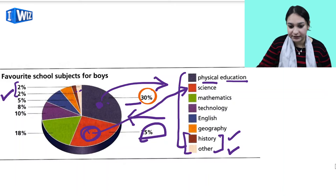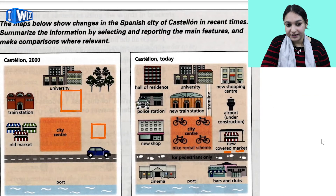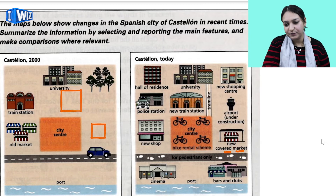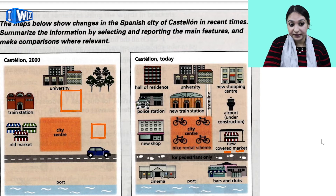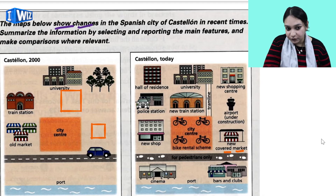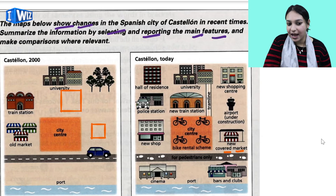Now let's practice one more visual representation. Here we have a map. A map is also a visual representation — when we read a map, we get many information points and data, and using that data we build a paragraph in our own words and write our answers. The question says: the maps below show changes in the Spanish city of Castellan in recent times. Summarize the information by selecting and reporting the main features and make comparisons where relevant.